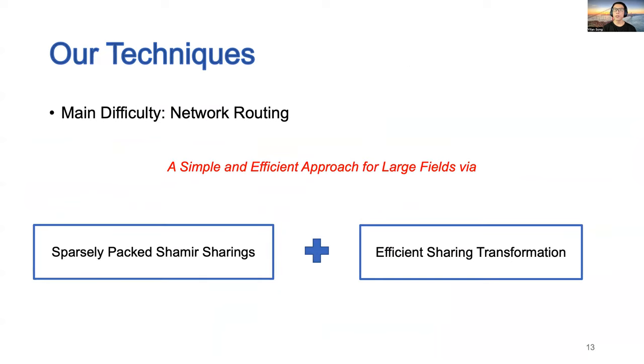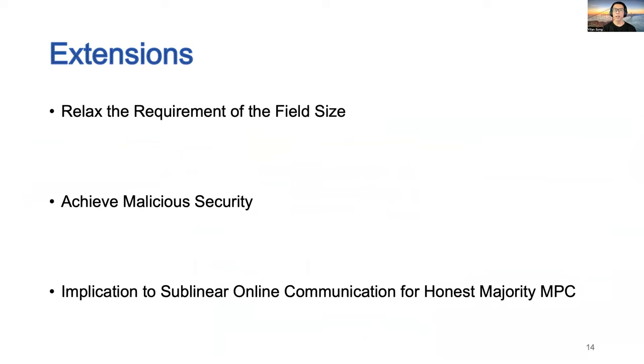Combining these two techniques, we show how to solve network routing, which is the main difficulty of using packed secret sharings to evaluate a single circuit. Our work also shows how to relax the requirement of field size, achieve malicious security, and connect to the standard honest majority setting.